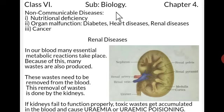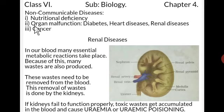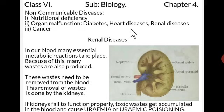In the previous videos we have discussed that if we classify non-communicable diseases specifically, there will be 5 categories: 1. Nutritional deficiency diseases, 2. Organ malfunction diseases, 3. Cancer, 4. Degenerative diseases, and 5. Allergies. We have also discussed nutritional deficiency diseases, and in the organ malfunction diseases we have discussed diabetes and heart diseases.